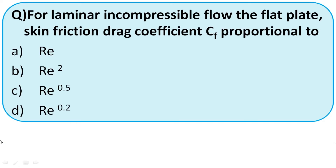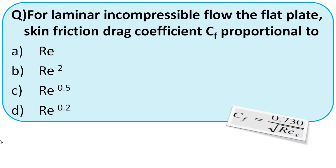For laminar compressible flow over a flat plate, the skin friction drag coefficient C_f is proportional to: Re^2, Re^(1/2), or Re^(1/5). Recall the formula: C_f = 0.730/√Re_x. Since it is divided by the square root, C_f is proportional to Re^(−0.5). The right option is C.